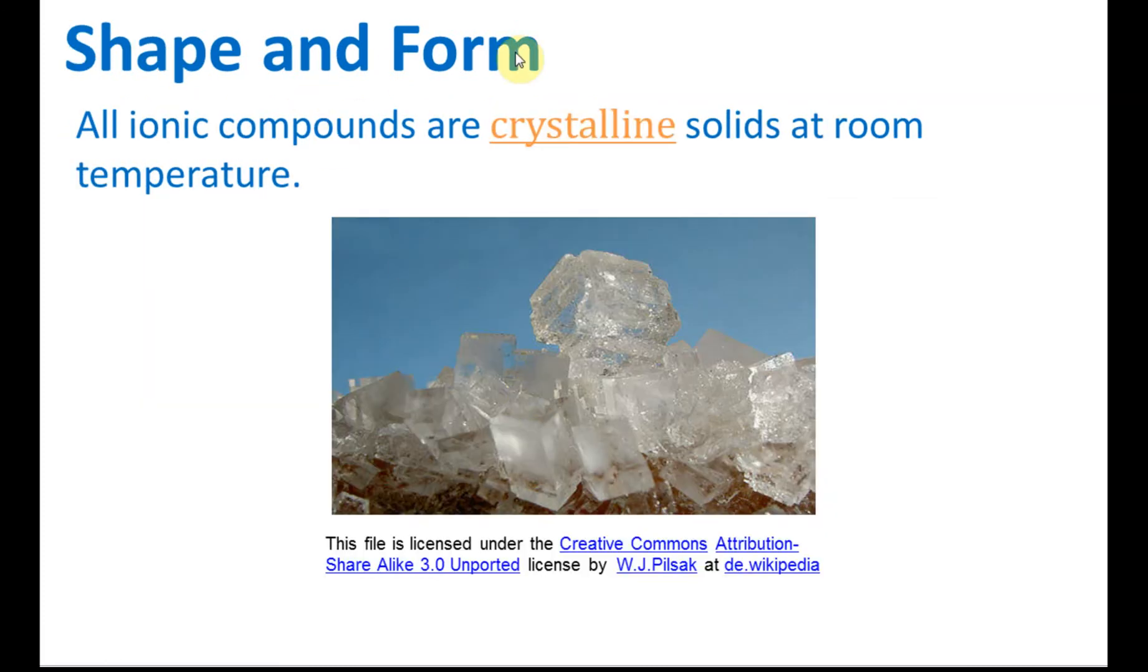And the shape and form. All ionic compounds are crystalline solids at room temperature. We say it will form structures in orderly, the particles, the ions, arranged in an orderly manner and this will cause them to form the shape of crystal. So they are crystalline.